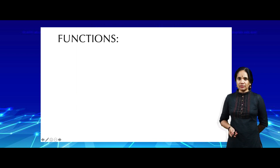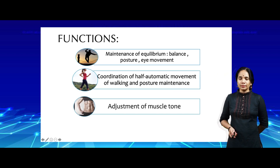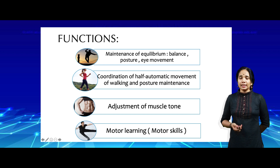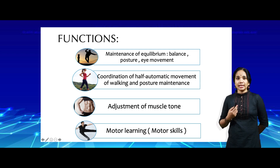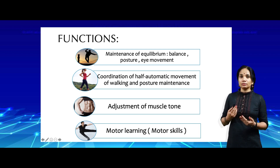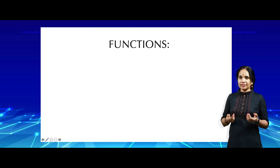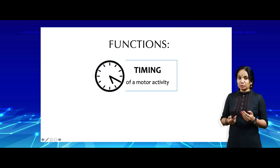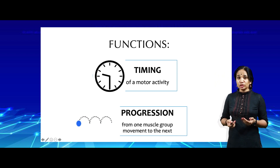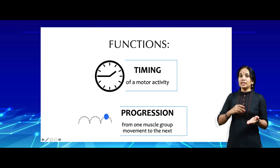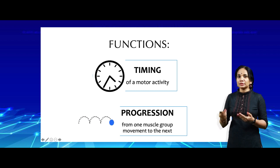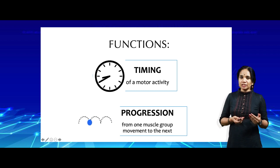In every textbook, the functions given are mainly four: the cerebellum helps in maintenance of posture, coordination of motor actions such as walking and posture maintenance, adjustment of muscle tone, and motor learning. But if someone were to ask you to concisely describe cerebellar functions in two functions, you can describe them as timing of a motor activity and progression of one motor activity smoothly into the next sequential one — that is, one muscle group movement to the next.